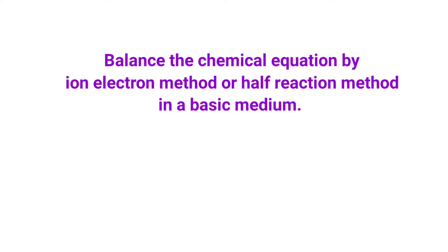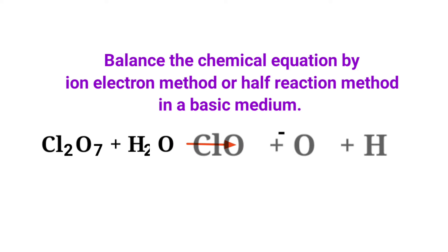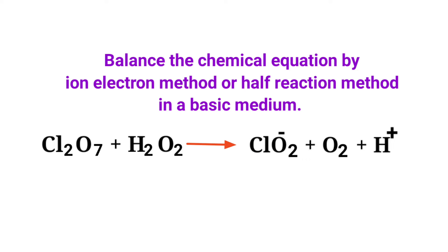Balance the chemical equation by the ion-electron method (half-reaction method) in a basic medium. The equation is: dichlorine heptoxide plus hydrogen peroxide gives chloride ion plus oxygen plus hydrogen ion.